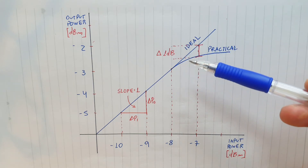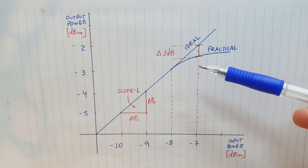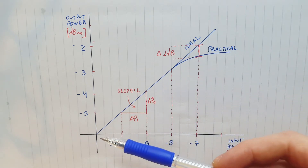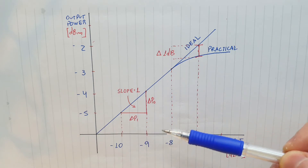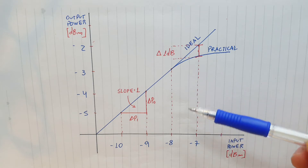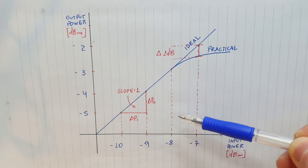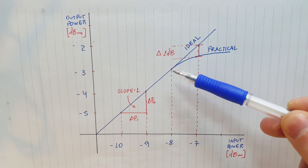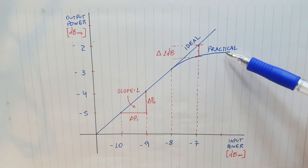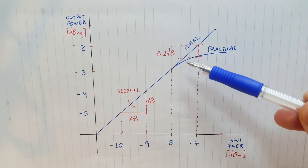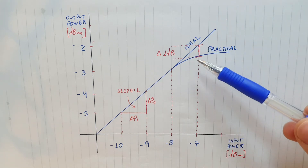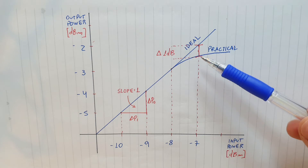The 1dB compression point is where the amplifier gain is reduced by 1dB due to compression. In this example, the amplifier behaves in the small signal region until about -7dB to -8dB of input power, and at this point the output power starts to compress. When the ideal curve and the practical curve become 1dB apart, we have the 1dB compression point.